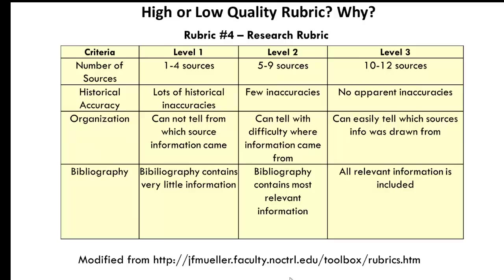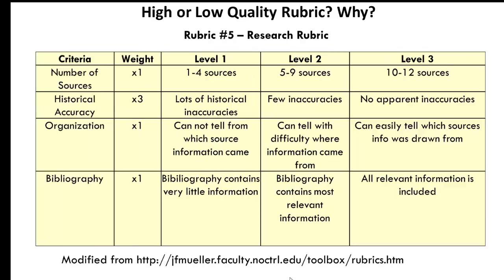Take a look at this rubric modified from the previous source. Is this better? Why or why not? What had to happen? Pause and rewind if necessary to see the differences. It appears that all criteria are weighted equally — is this appropriate? What do you think? Take a look at this rubric once again, modified from the previous example. It appears that accuracy is weighted more than the other three criteria. Based on the limited information we have, do you think this is appropriate? Why or why not?